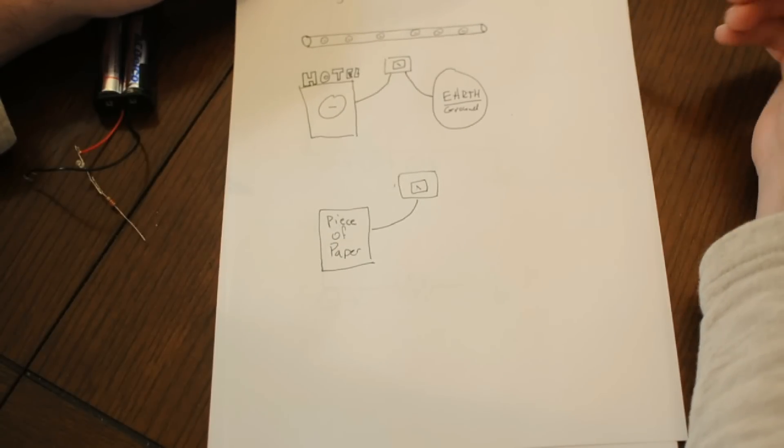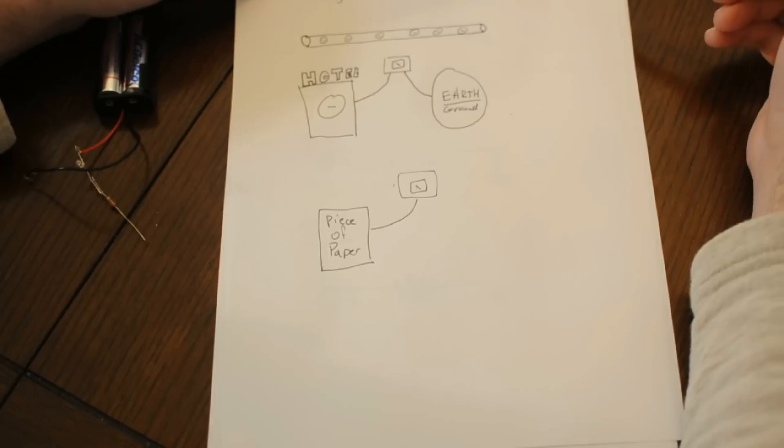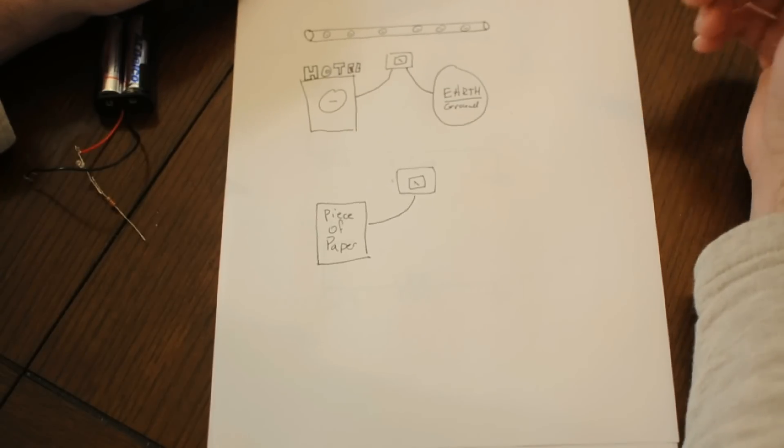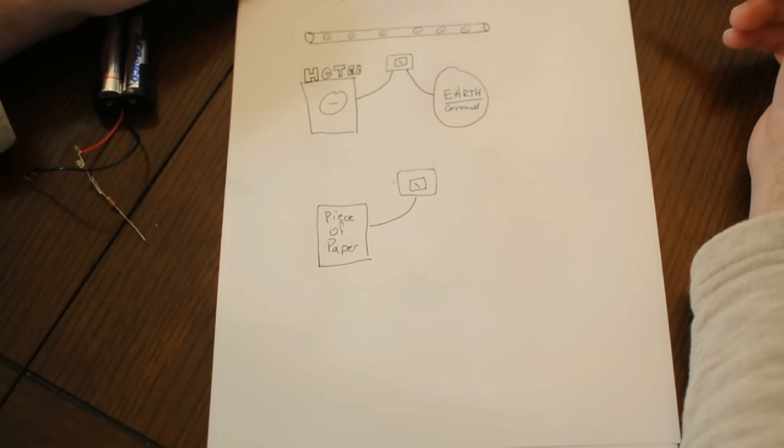Voltage is what causes current to flow. If there's no voltage, the electrons don't go anywhere. It's the potential difference between two points, and electrons only flow when there is a potential difference.